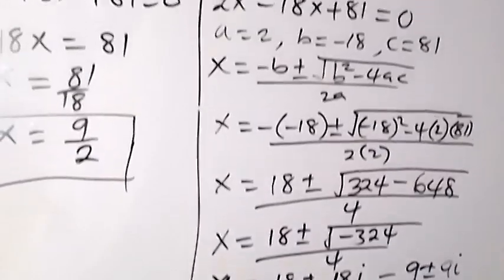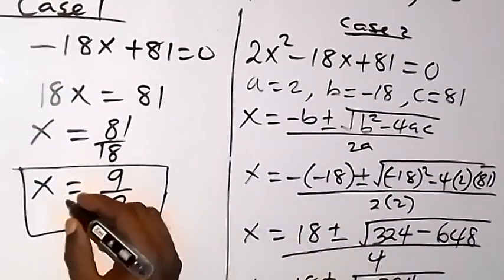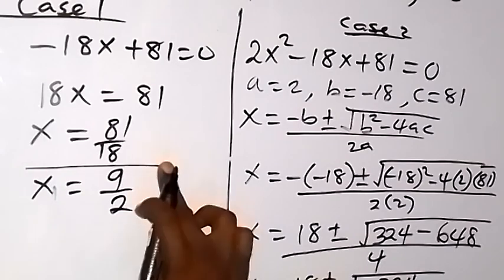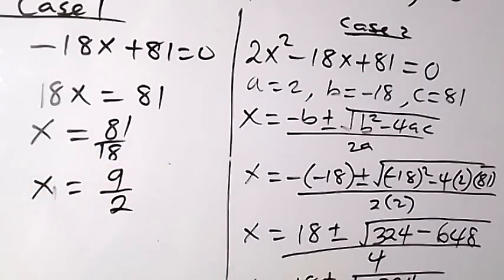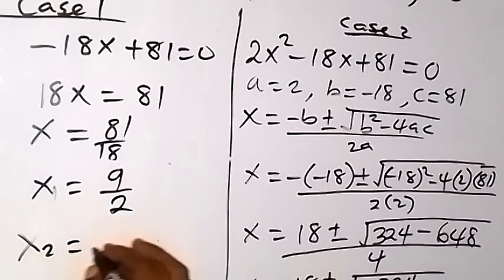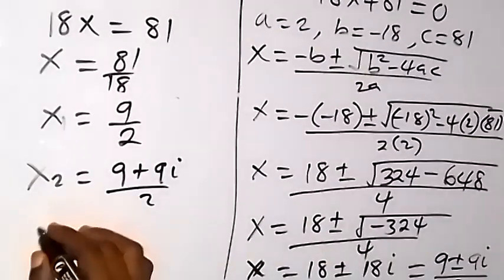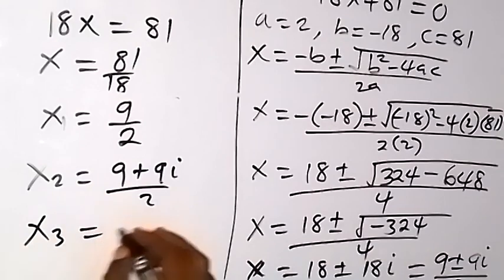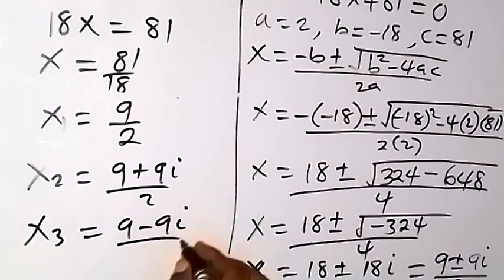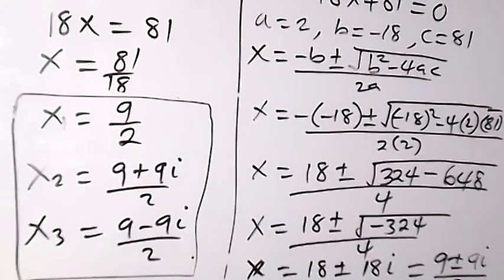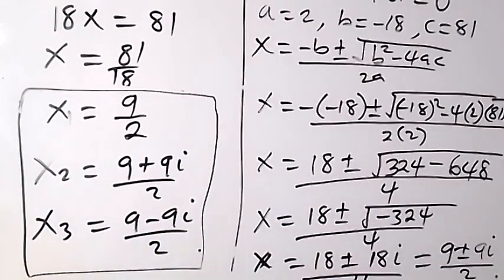We have complex solutions from Case 2. So the first value of x is x1 equals 9 over 2. The second value is x2 equals (9 plus 9i) over 2, and the third value is x3 equals (9 minus 9i) over 2. Here we have three solutions, of which two are complex. Thereby we have come to the end of this class. Thank you for watching. Don't forget to subscribe to this channel for more videos. See you in the next class, bye for now.